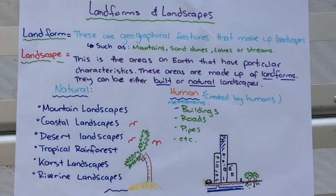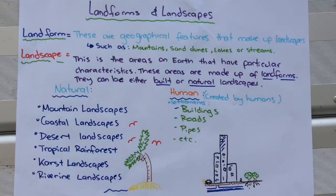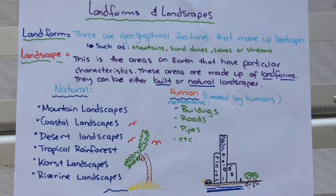There are two key words that I really want you to understand today. One is landforms and one is landscapes. Landforms refers to geographical features that make up a landscape — things such as sand dunes, lakes, or streams. You may even say something like hills as well.